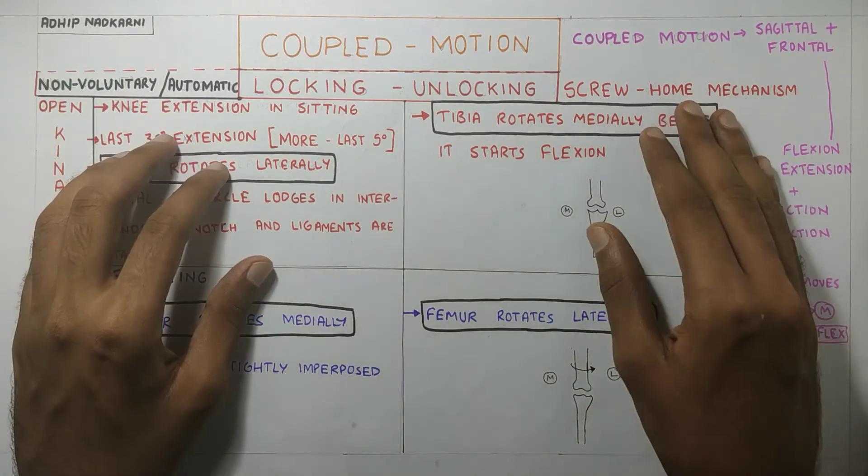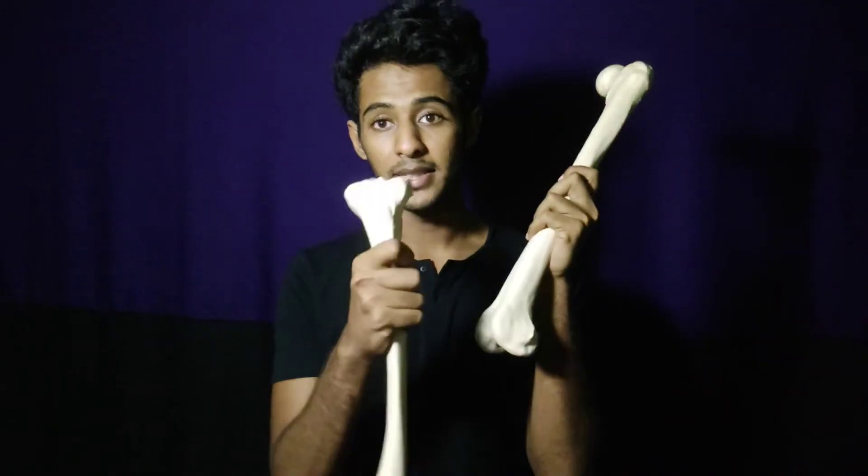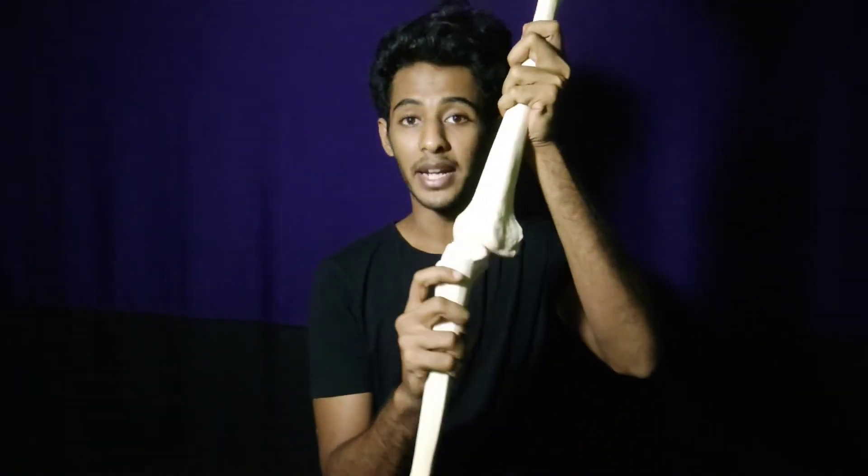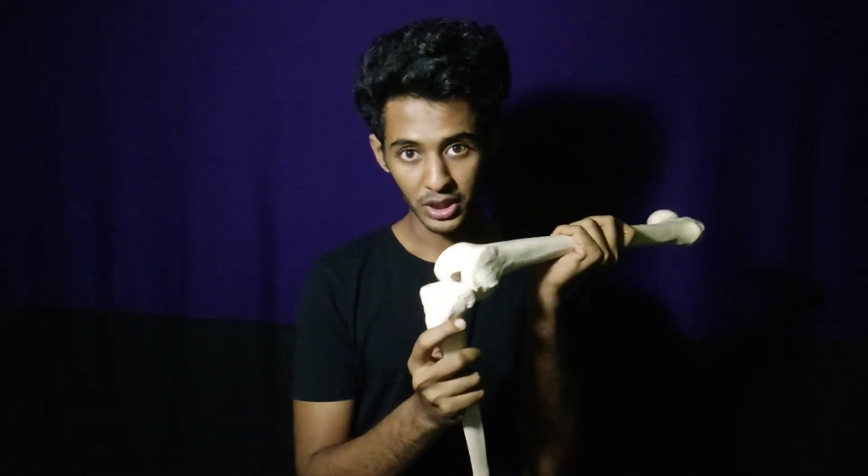Let us see this practically. This is my femur and this is the tibia. In an open kinematic chain where the femur is fixed and the tibia is moving — when the tibia goes into extension, at the last 30 degrees the tibia rotates laterally and locks itself on the femoral condyles. From extension going back into flexion, the tibia rotates medially in the last 30 degrees again to unlock the knee joint. The locking movement is seen to a greater extent in the last 5 degrees of extension.